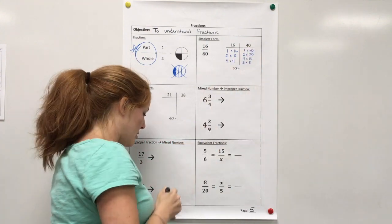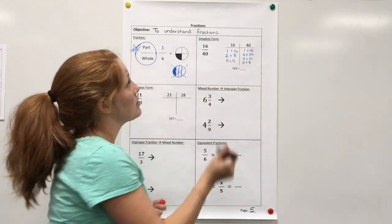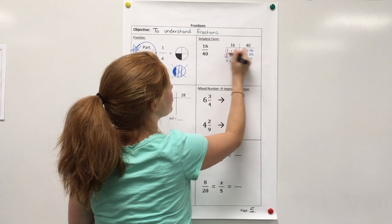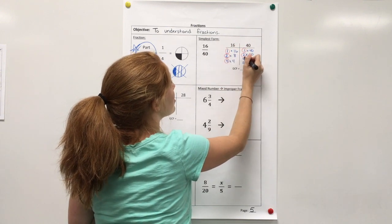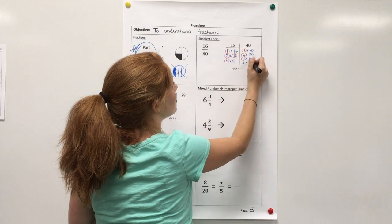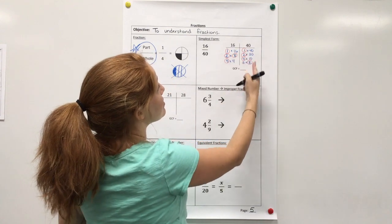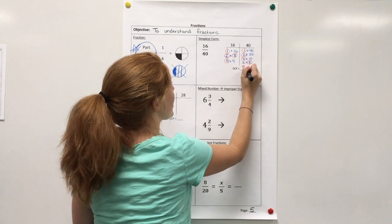Now I'm going to look on both sides. And I'm going to see what they have in common. They both have a 1. They both have a 2. They both have 4. They both have 8. Anything else? No. So the greatest common factor would be 8.